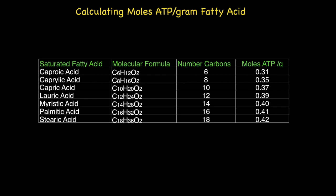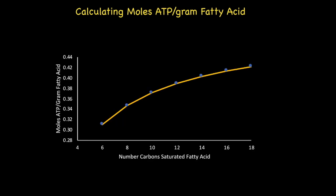Here is a table that gives a summary of the number of moles of ATP per gram of different saturated fatty acids. If we graph these values, it is clear to see that there is a steady rise in energy density in terms of moles of ATP per gram of fatty acid with an increase in fatty acid chain length. In summary, longer chain fatty acids such as stearic acid possess a higher energy density per gram than shorter chain fatty acids.